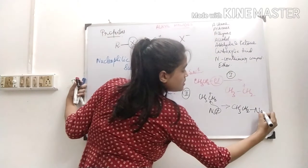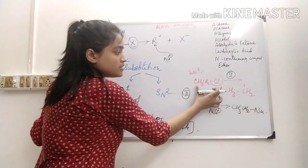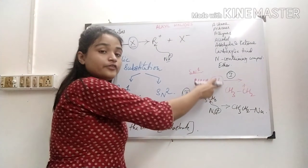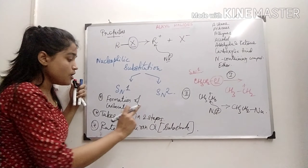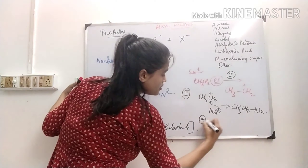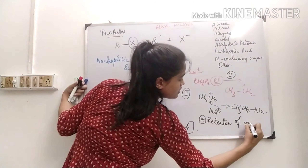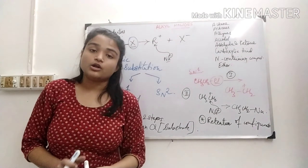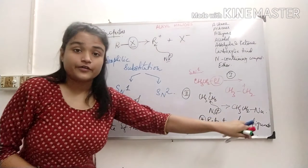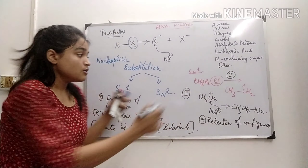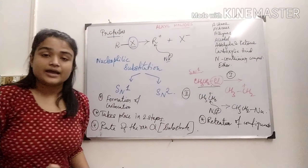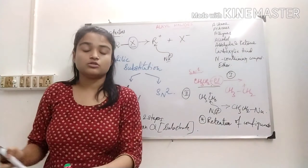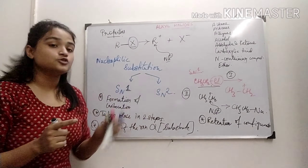The nucleophile will replace the chlorine. The configuration of this molecule is maintained in the product — whatever configuration it was in the parent molecule is retained in the product. So another property of SN1 is retention of configuration. It retains the original configuration of the reactant molecule. The rate depends only on the substrate — when the carbocation forms, that is the rate-determining step. That is why it is called SN1.